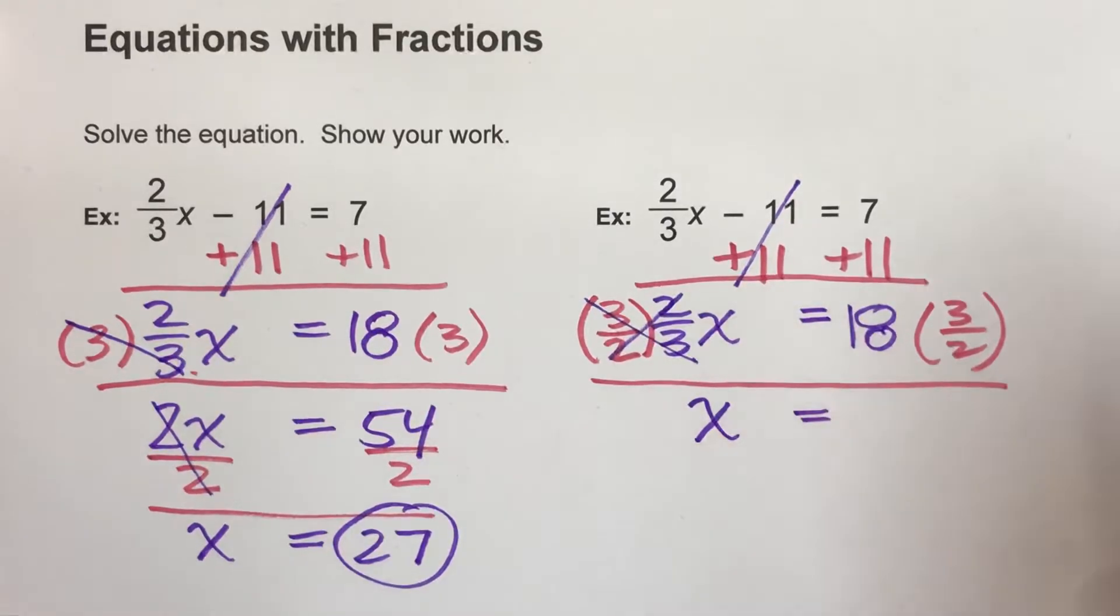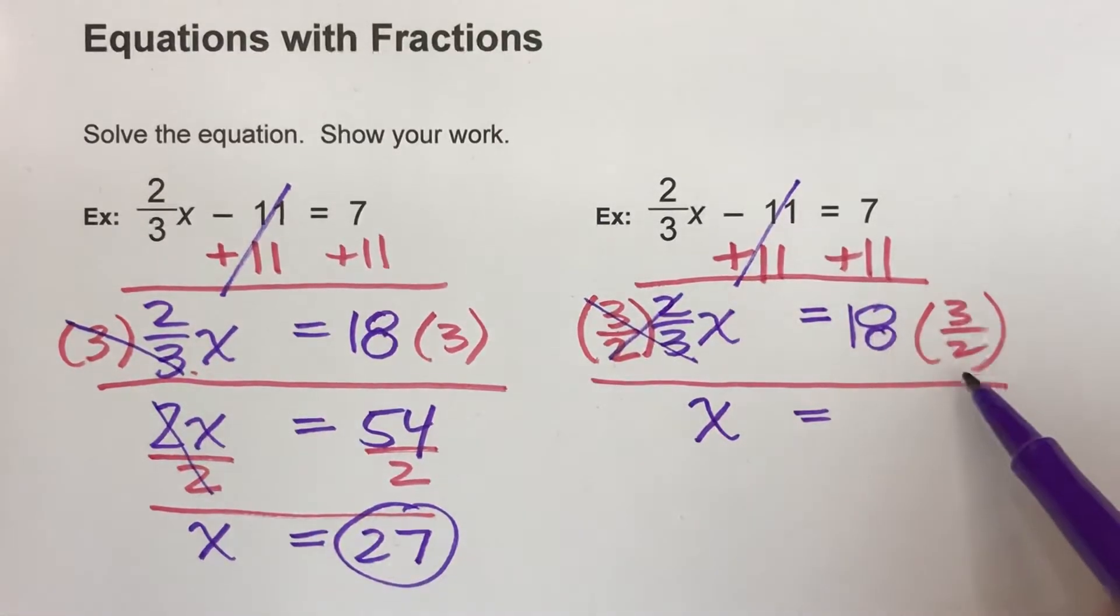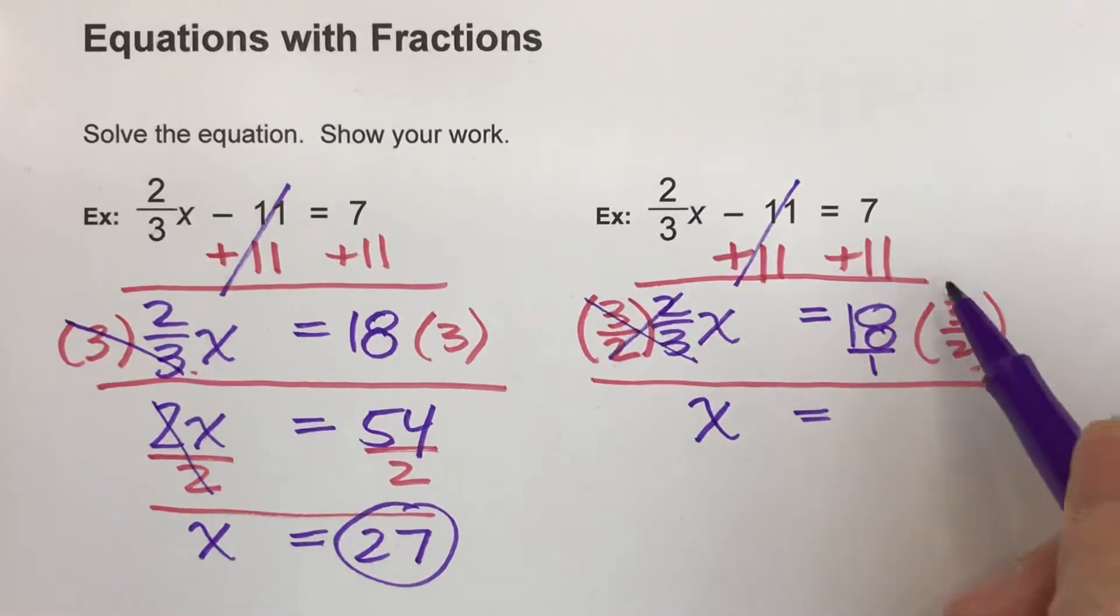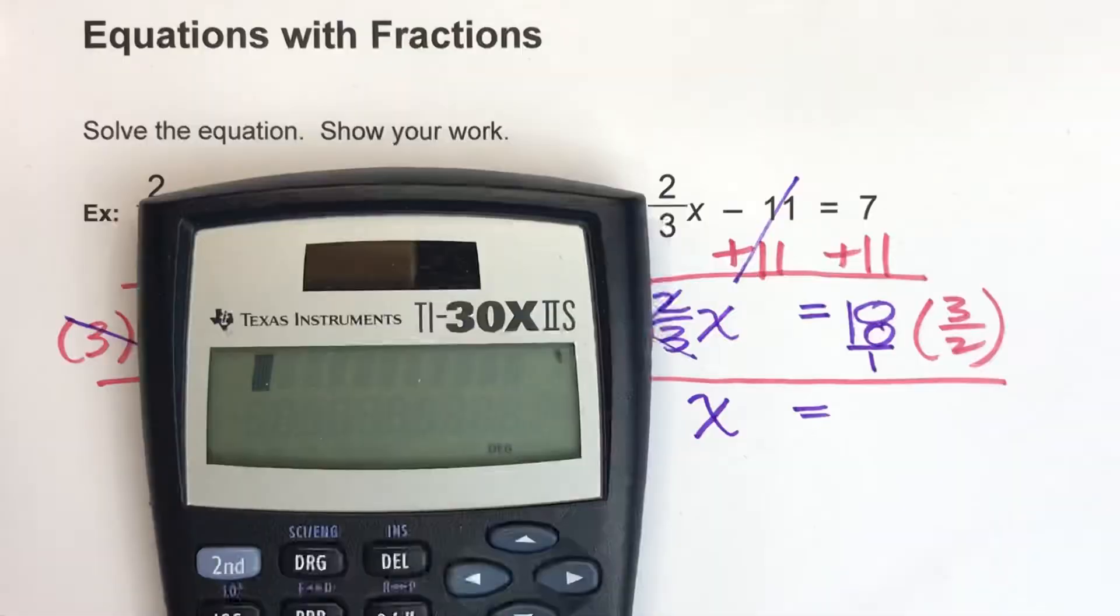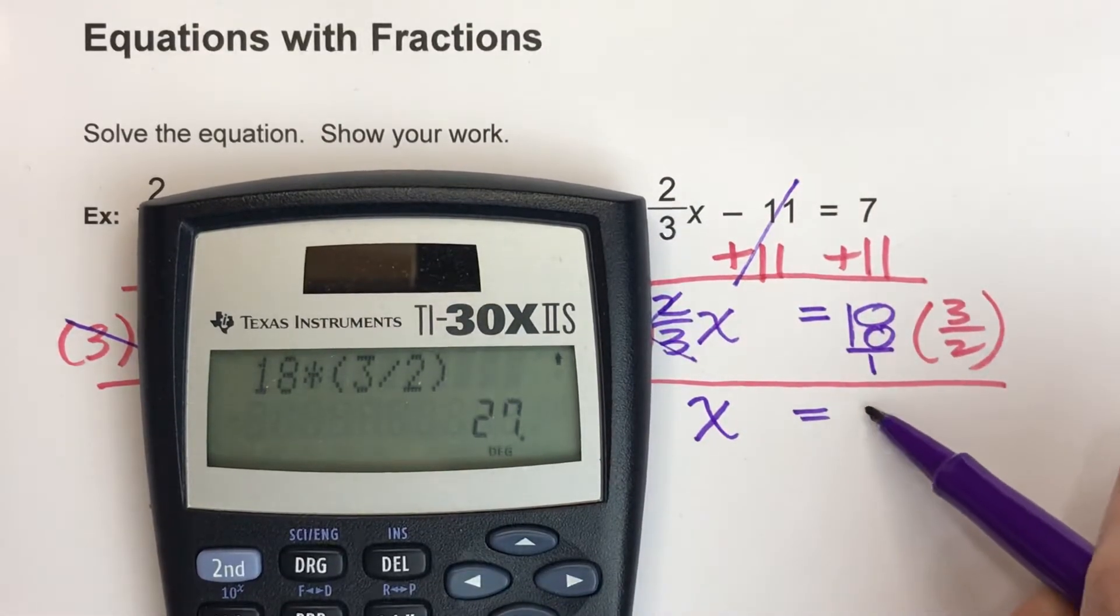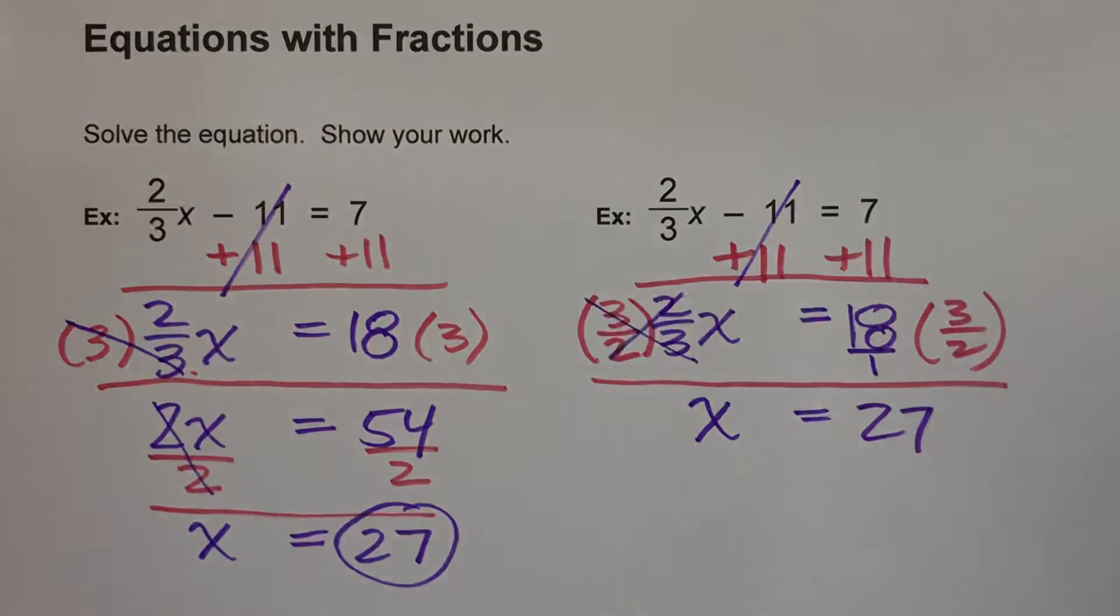Now on the other side, I just do 18 times 3 over 2. And you can do this by hand if you want to. 18 times 3, 1 times 2, and divide it. Also, some calculators can do this too. 18 times 3 over 2. And it'll just tell you the answer is 27. And that's our answer.